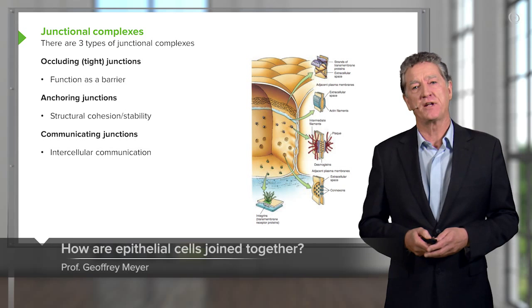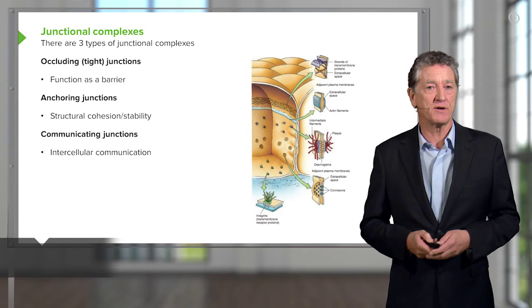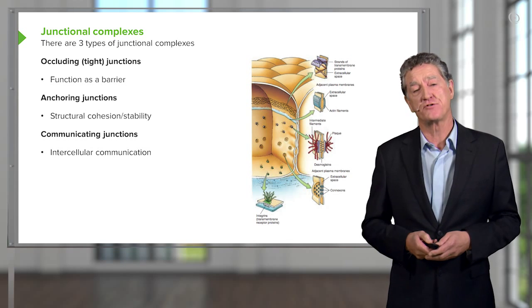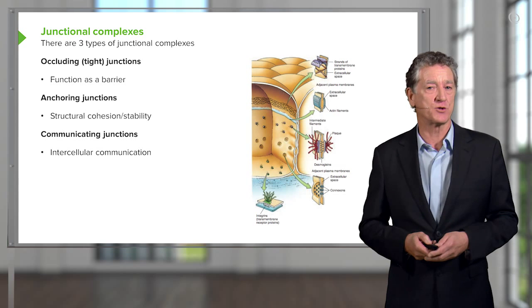Let's now look and see how epithelial cells are joined together. Well, there are three different types of junctional complexes, and they have three different sorts of functions.